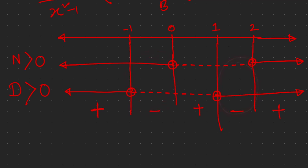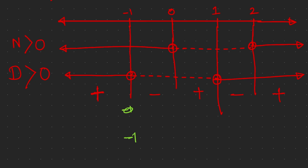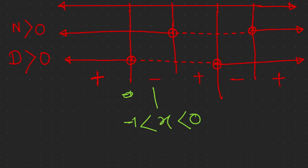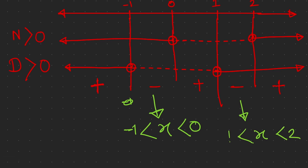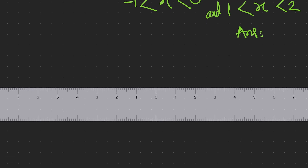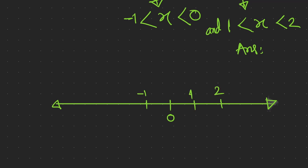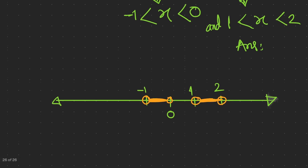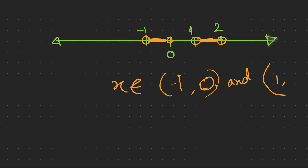The solution ranges where the quotient is negative are: negative 1 less than x less than 0, and 1 less than x less than 2. On the graph, this represents the intervals from negative 1 to 0 and from 1 to 2. Using set notation, x belongs to (negative 1, 0) union (1, 2). This is our final answer.